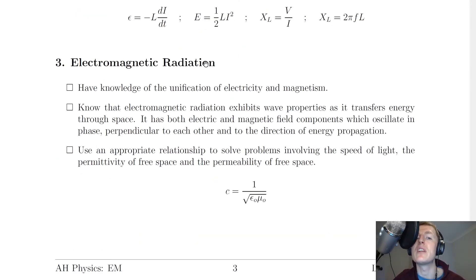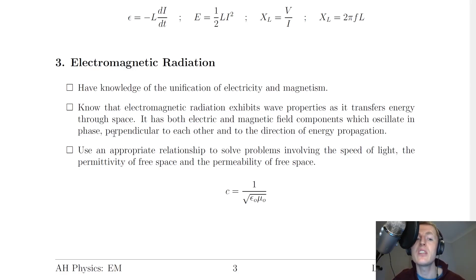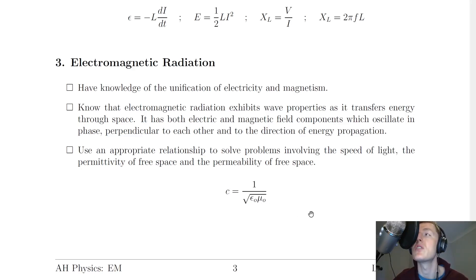For section three on electromagnetic radiation, you need knowledge of the unification of electricity and magnetism — specifically James Clerk Maxwell's four equations which combine electricity and magnetism into electromagnetism. Electromagnetic radiation exhibits wave properties as it transfers energy through space, with both electric and magnetic field components oscillating in phase, perpendicular to each other and to the direction of propagation. Finally, use the relationship C equals 1 over the square root of ε₀μ₀ to solve problems involving the speed of light, permittivity of free space, and permeability of free space.